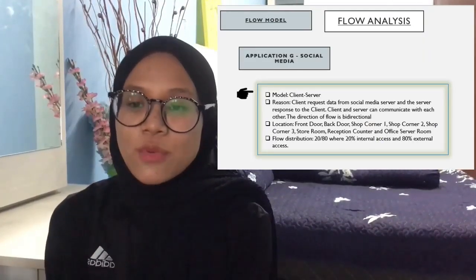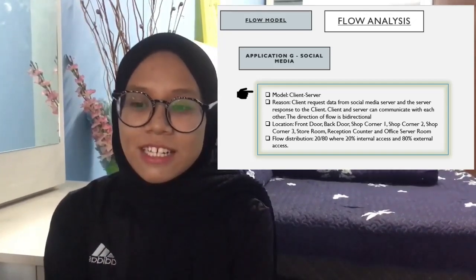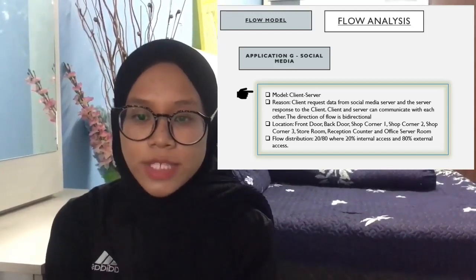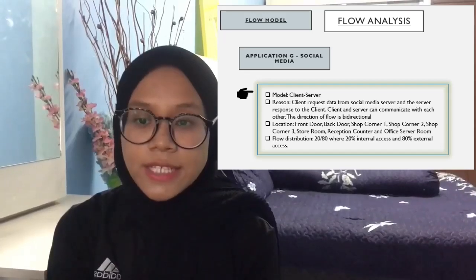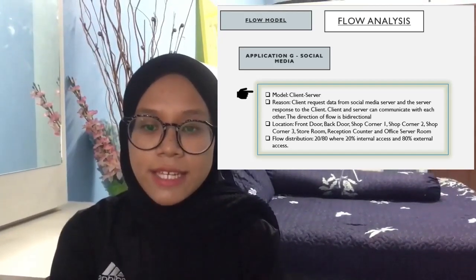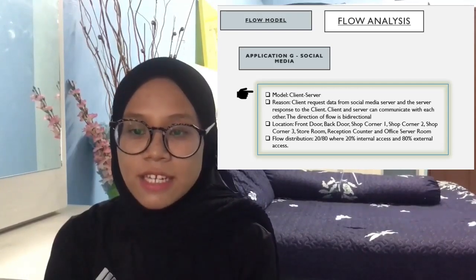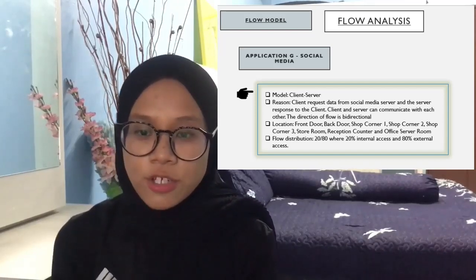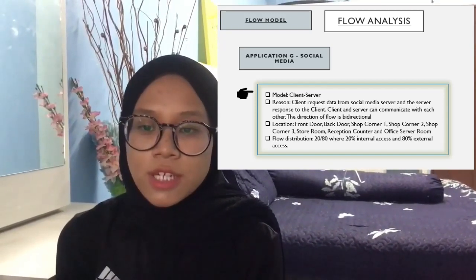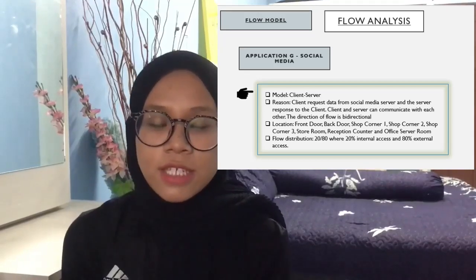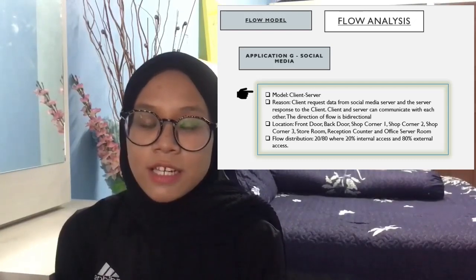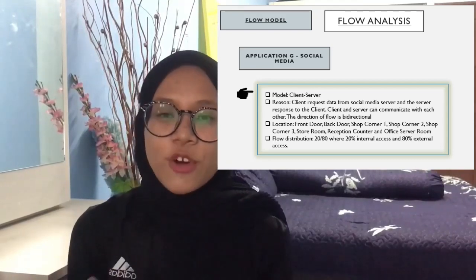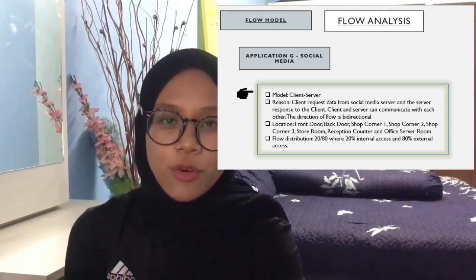The last application is application G, which is social media. Its model is client-server because the client can request data from the social media server and the server responds. Client and server communicate bi-directionally. Locations are front door, back door, shop corners 1, 2, and 3, storeroom, reception counter, and office server room. The flow distribution is 20/80 — 20% internal and 80% external access. That concludes the flow analysis.